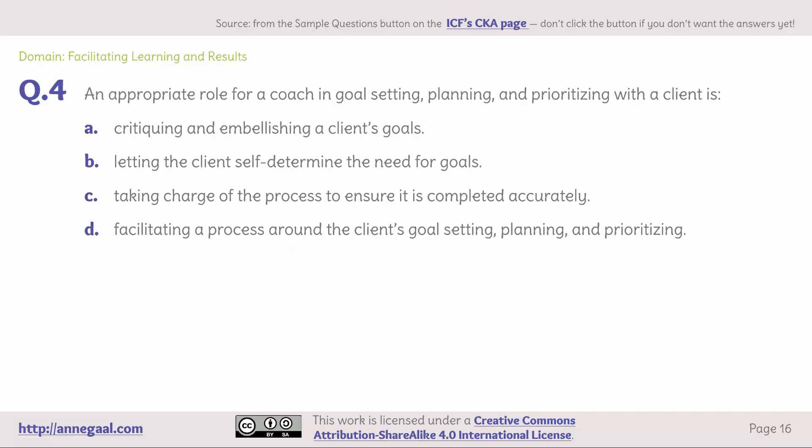Domain: facilitating learning and results. Question 4. An appropriate role for a coach in goal setting, planning, and prioritizing with a client is — A. Critiquing and embellishing a client's goals. B. Letting the client self-determine the need for goals. C. Taking charge of the process to ensure it is completed accurately. Or D. Facilitating a process around the client's goal setting, planning, and prioritizing.